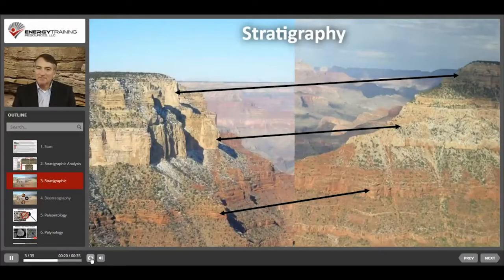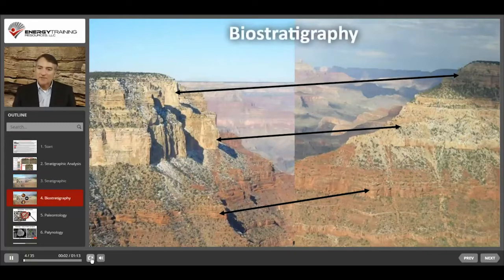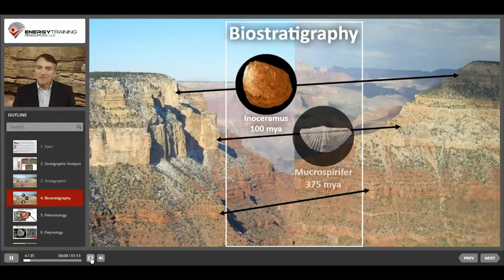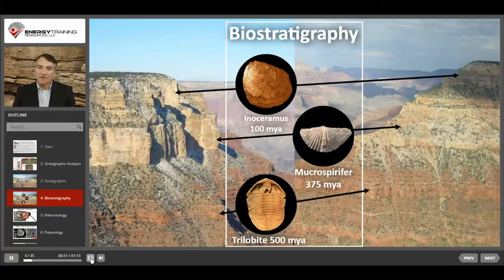Matching rock layers from different locations based solely on their appearance and characteristics can have limitations. For example, rocks in one area may look the same as rocks in another area, but in fact they may be from different layers and of different ages. For this reason, biostratigraphy is also used. Biostratigraphy involves identifying fossils contained within the rock layers to ensure they're the same layers. These fossils can also provide useful information about the rocks.